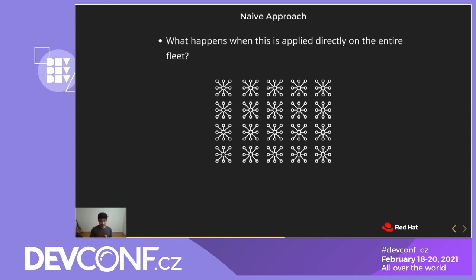If you apply our algorithms to the entire data set as one whole piece, you won't be able to surface all of the patterns. You'll only be able to see D and E, just because there are more clusters from customer Y compared to customer X. The thing is, we don't want to find just all frequently occurring patterns — we want to find frequently occurring patterns within some narrower domain. So we go back and split our fleet into somewhat meaningful groups, and then apply frequent pattern mining.